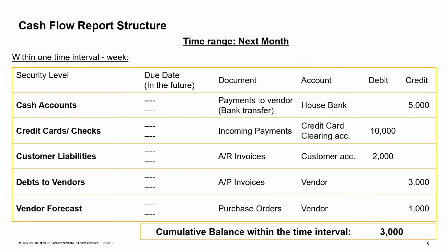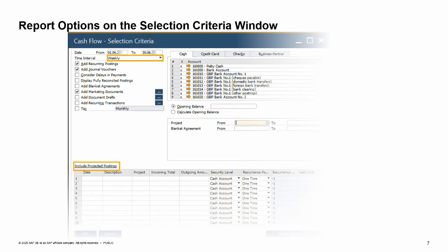Different transactions are displayed according to their security levels. On the cash flow selection criteria window, you can add to the cash flow: recurring transactions, which appear in green in the report; open journal vouchers, which are displayed in blue in the report; and marketing documents that do not create journal entries, such as sales orders and draft documents. You can also add approved blanket agreements to the report calculation. In the include projected postings table, specify future transactions that have not been recorded yet in SAP Business One, such as the purchase of a new car for the business designated to be executed next month.